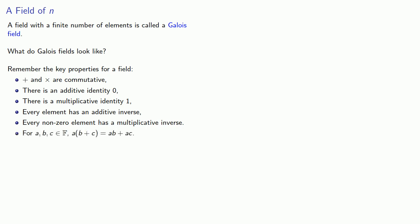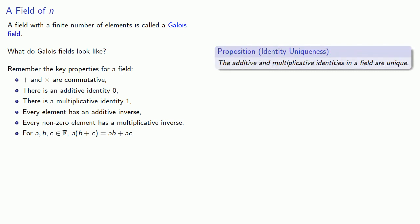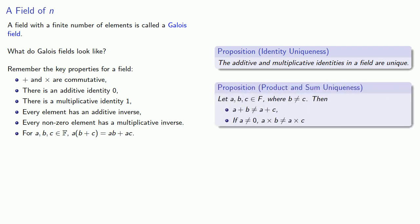For a, b, and c in our field, a times (b plus c) equals a times b plus a times c. There are also a few useful propositions. One is identity uniqueness: the additive and multiplicative identities in a field are unique. And there is product and sum uniqueness: if b is not equal to c, then a plus b is not equal to a plus c, and as long as a is not the additive identity, a times b is not equal to a times c.